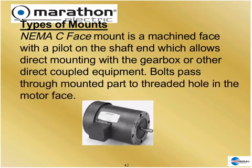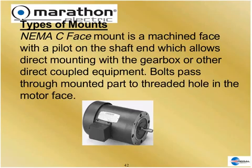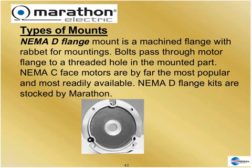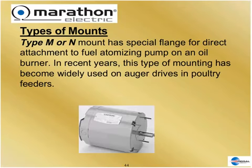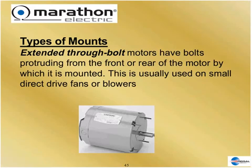Sometimes we want to mount the motor up against a bulkhead or into a gearbox, so we use a flange mount. The C-face has tapped holes so you can bolt the motor directly to a wall, bulkhead, or gearbox without needing the foot. The D-flange and N or M-flange are similar options. This type of flange is used on oil burner furnaces and, in recent years, auger drives in the poultry industry. Sometimes we just extend the bolts that hold the motor together and let the customer use those bolts to mount to his bulkhead or wall.